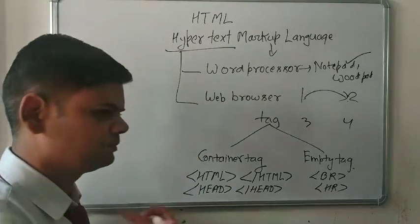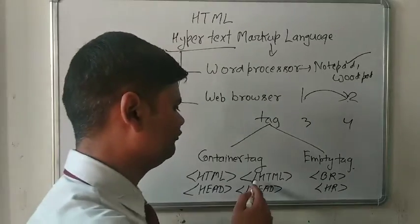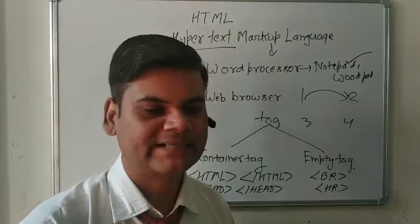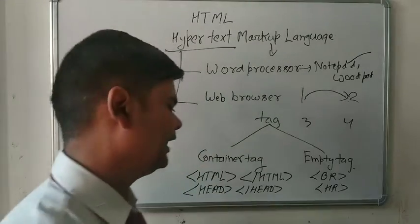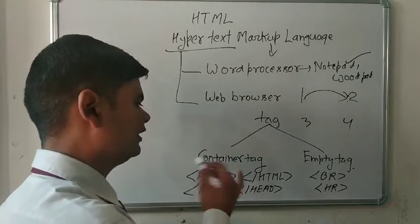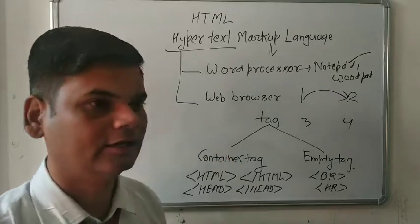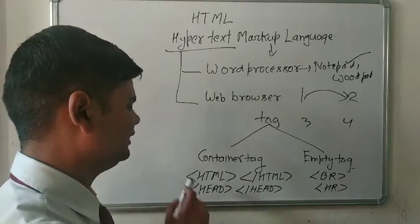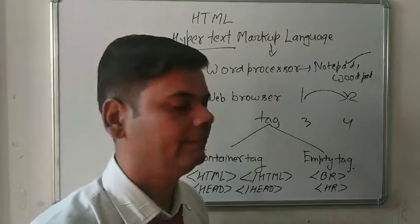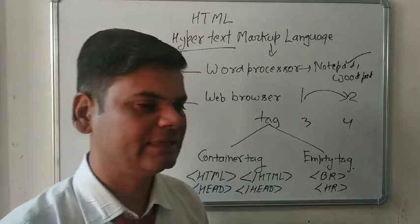In a starting tag we simply write down HTML, head, or title, but in an ending tag we use a backslash. Whenever any tag has a backslash, that means it is the ending tag, and if a tag doesn't have a backslash, that is the starting tag. Whenever any tag contains both the starting and ending tag, it is known as a container tag. Examples include HTML, head, title, and body tags.